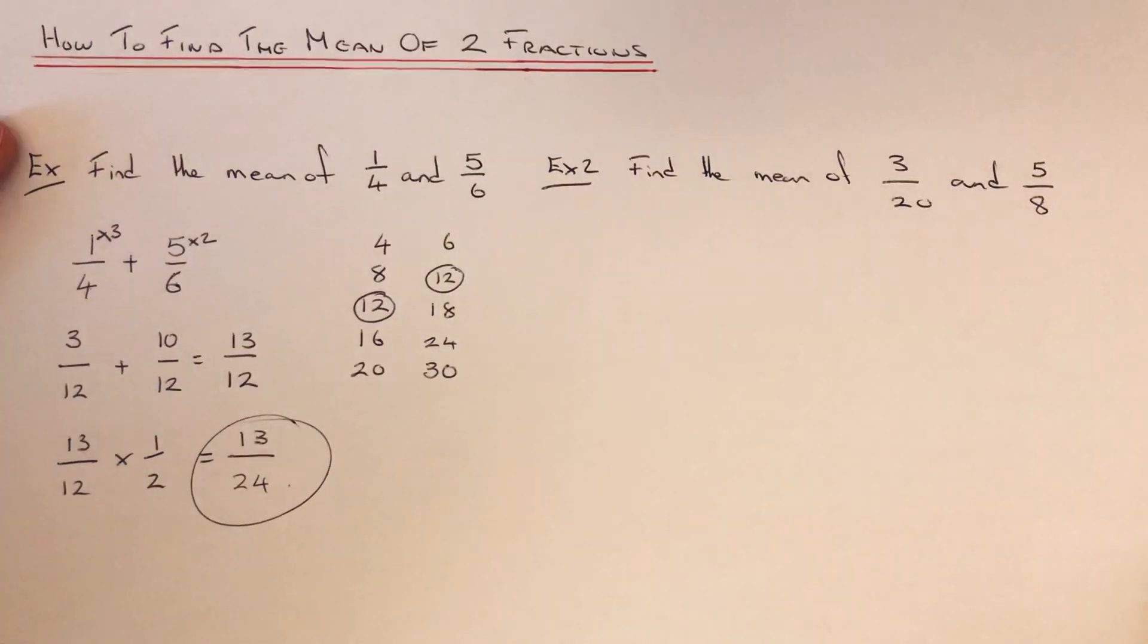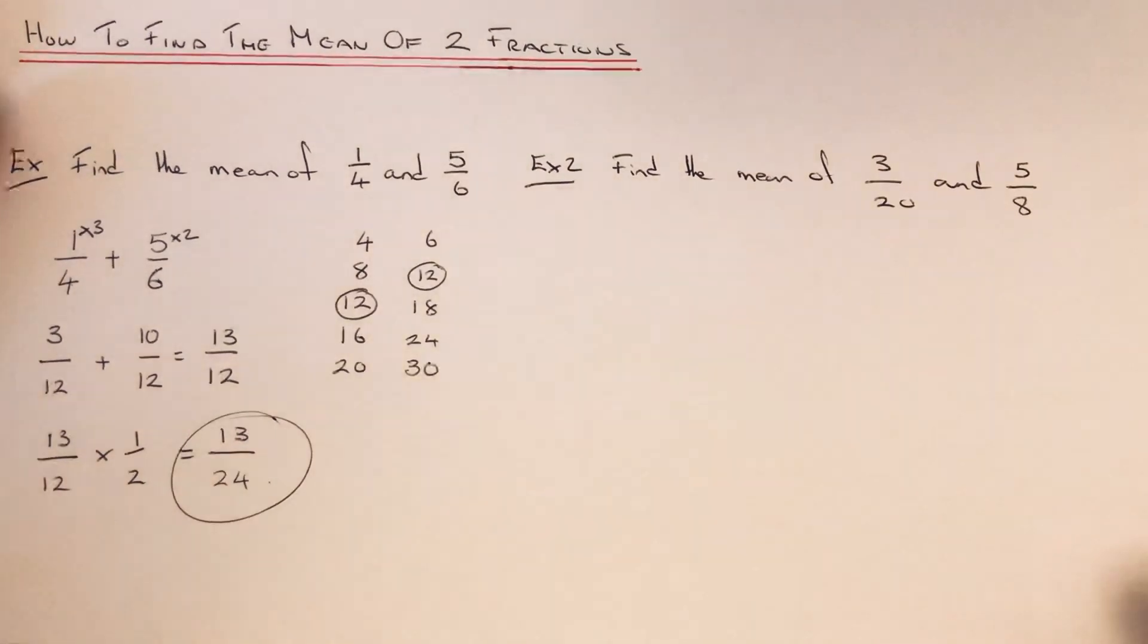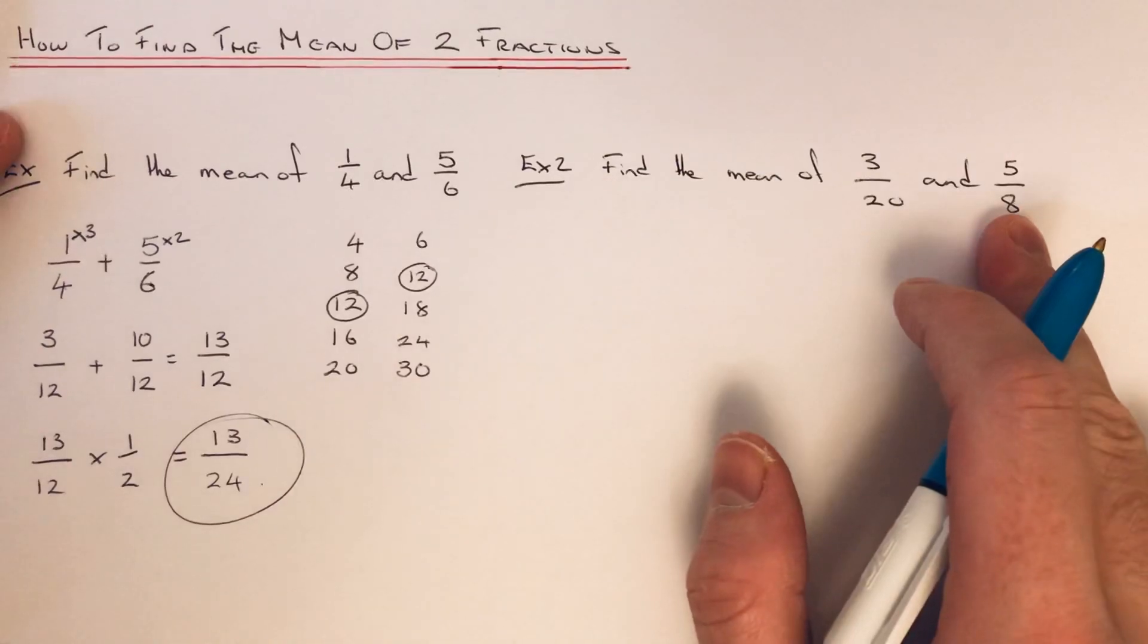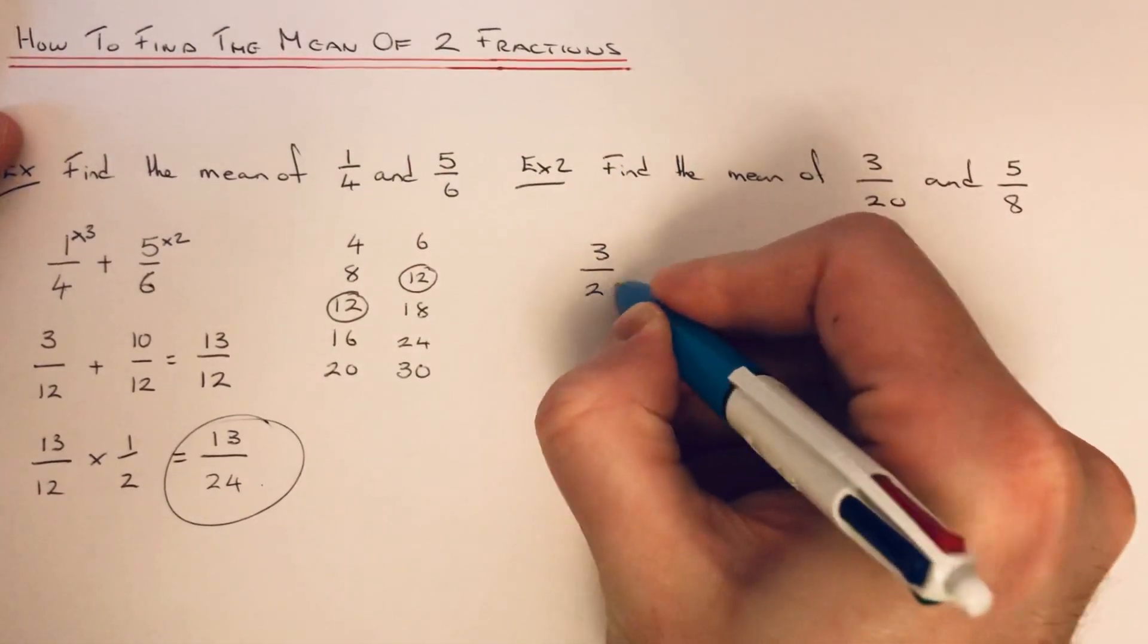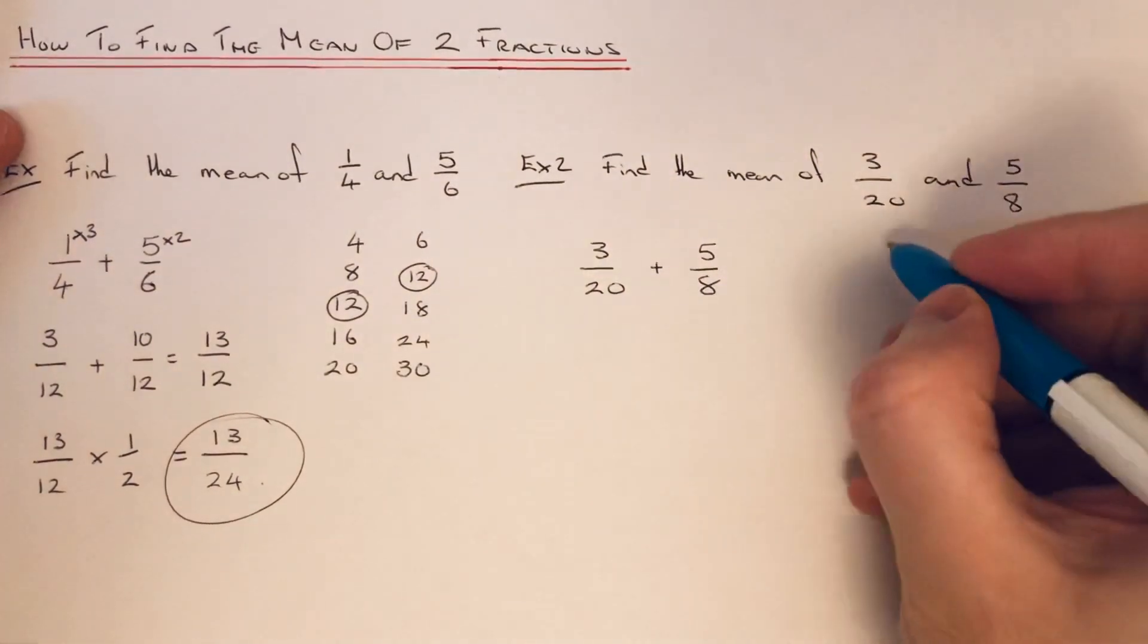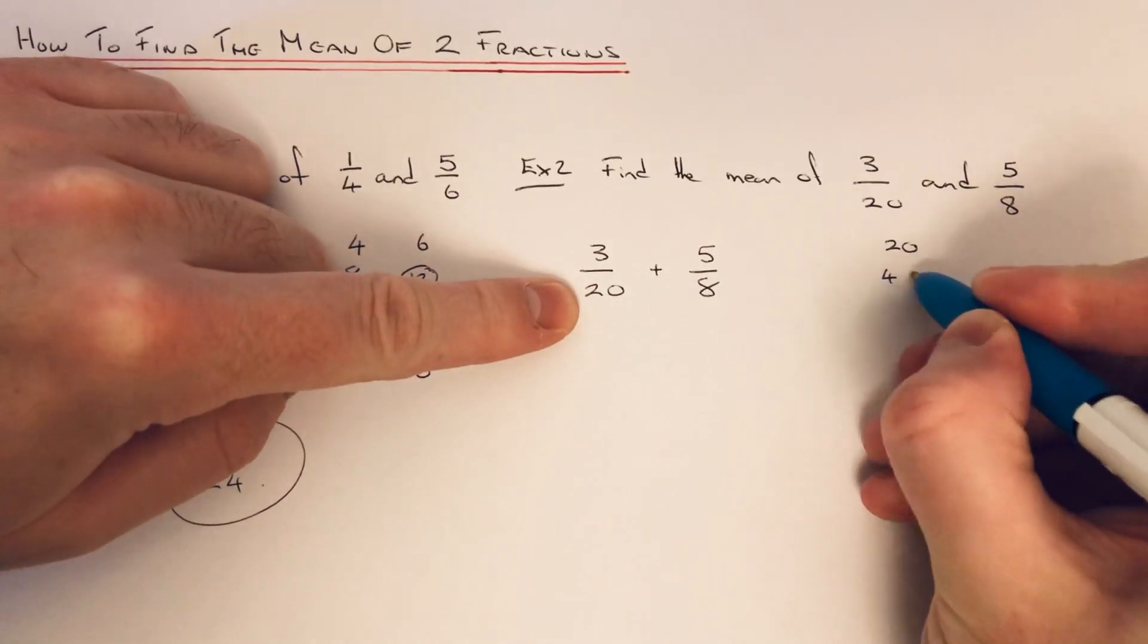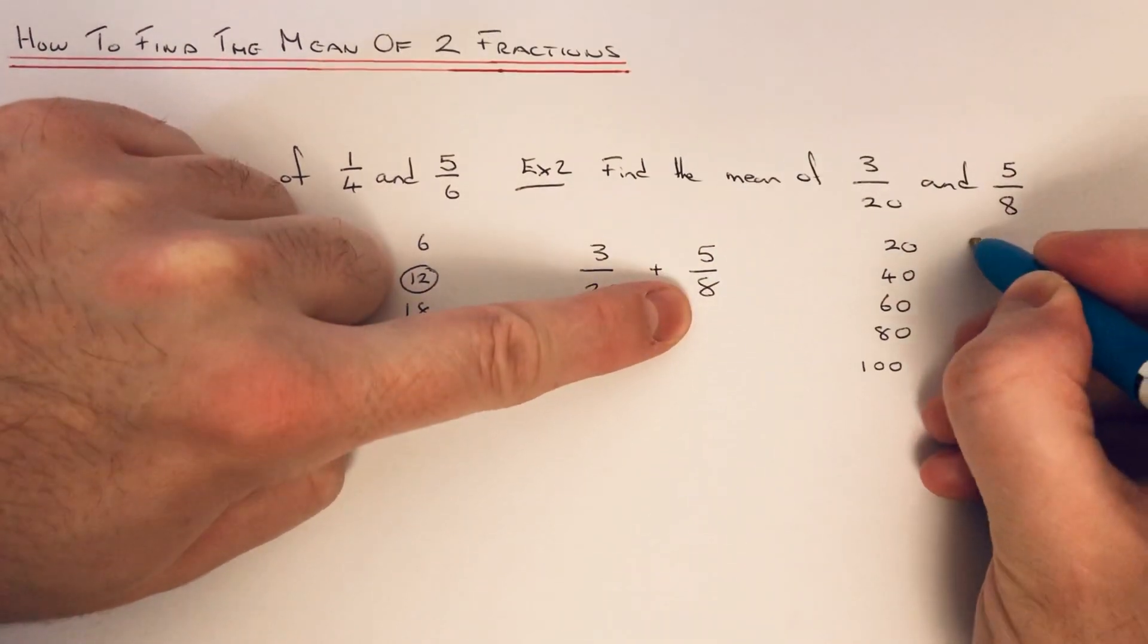And that is the mean of the two fractions. So let's move on to example 2 then. We've got to find the mean of 3/20 and 5/8. So again, we just add the fractions up to begin with. So if we find a common denominator, write down our multiples of 20, write down our multiples of 8.